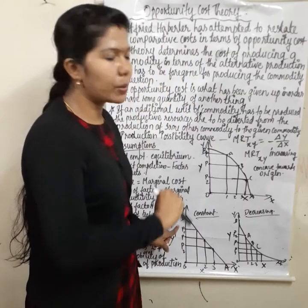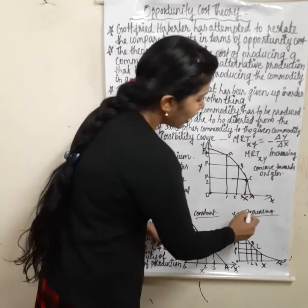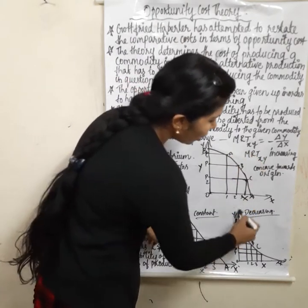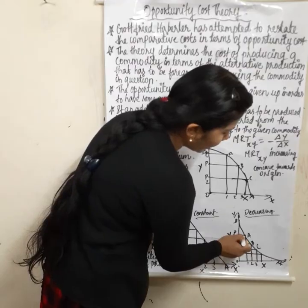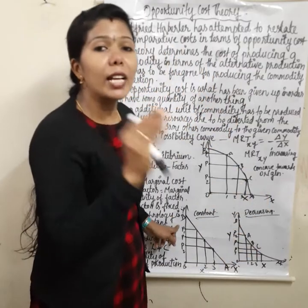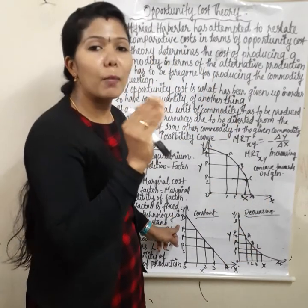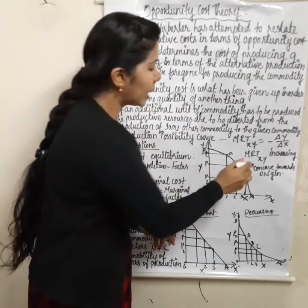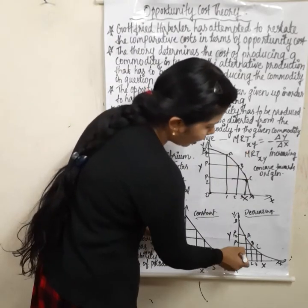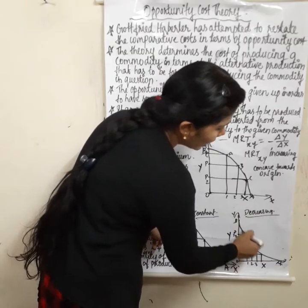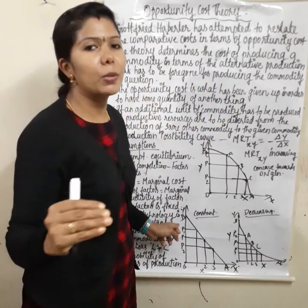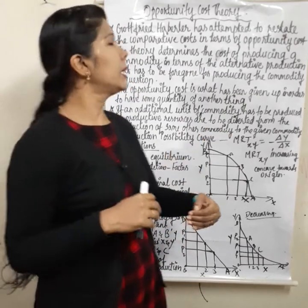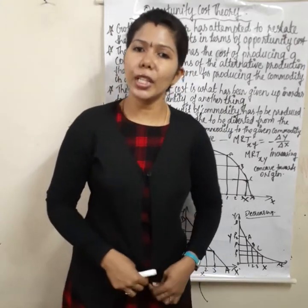This is decreasing MRT XY — the marginal rate of transformation for X and Y decreases. This gives a production possibility curve that is convex to the origin.